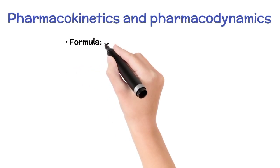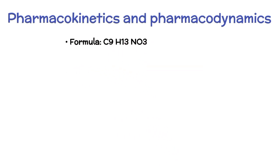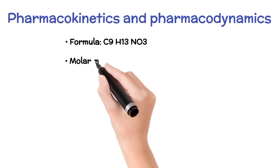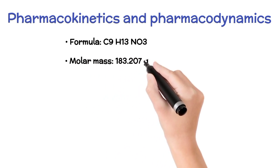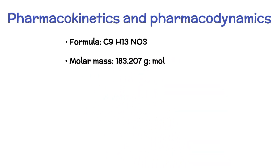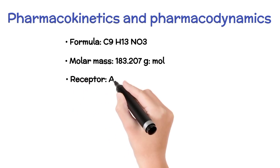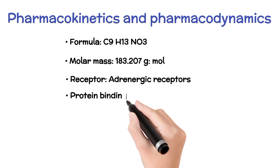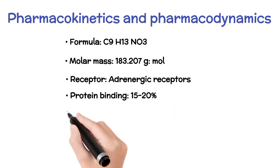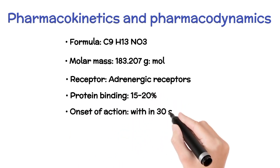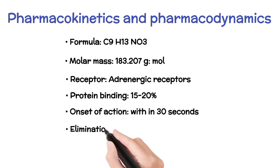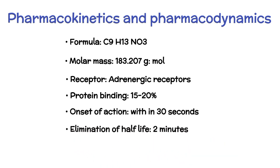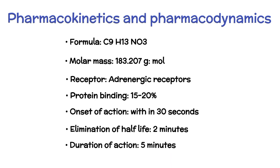Pharmacokinetics and Pharmacodynamics — Formula: C9H13NO2. Molar mass: 183.207 g/mol. Receptor: adrenergic receptor. Protein binding: 15–20%. Onset of action: within 30 seconds. Elimination half-life: 2 minutes. Duration of action: 5 minutes.